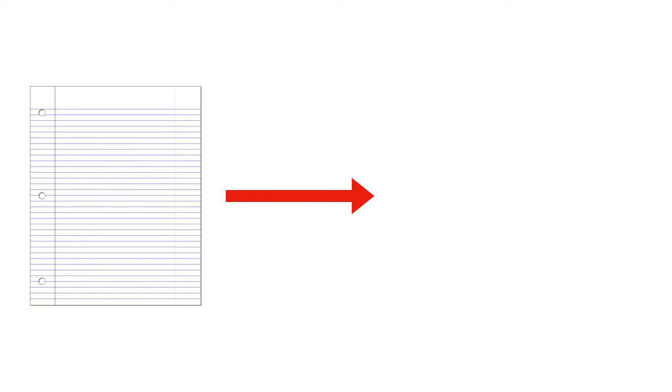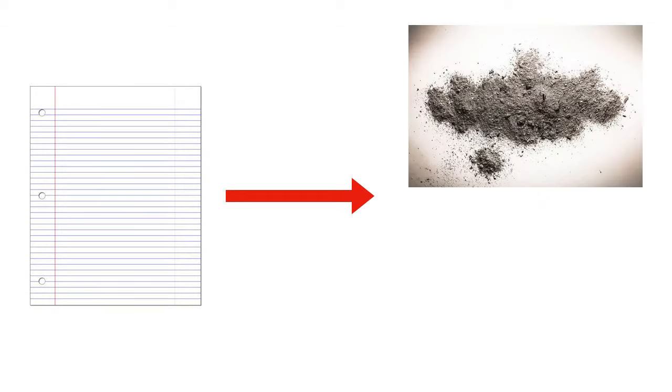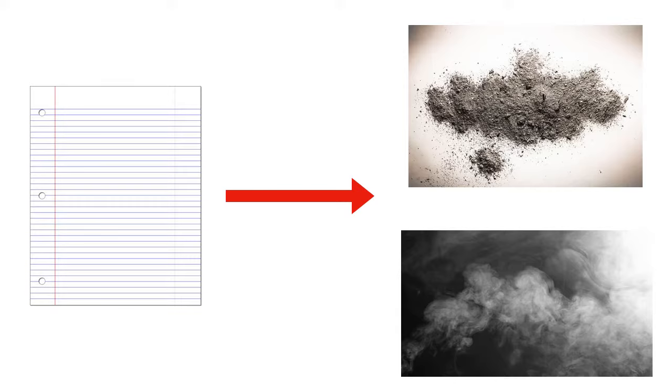When you burn paper, the paper is turning into both ash, which you might see on the floor, and the smoke that you see going up in the air. And because paper is turning into these new substances, this is an example of a chemical change.